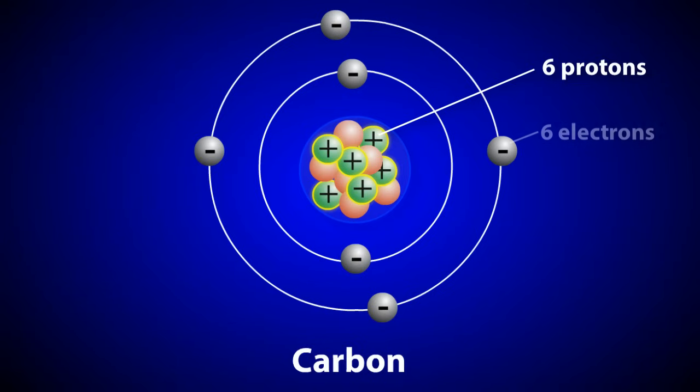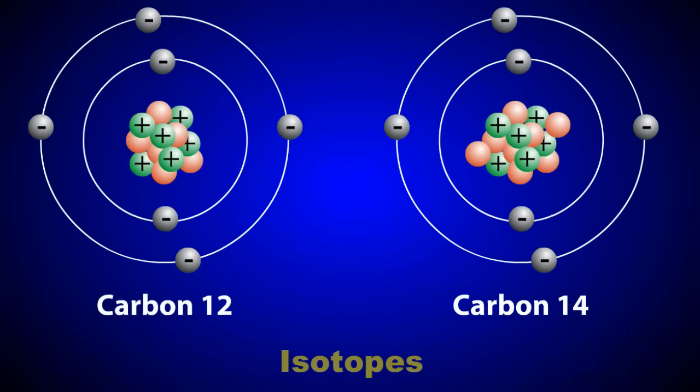All carbon has six protons and therefore six electrons. However, there may be minor variations in the number of neutrons in atoms of an element. These variations are called isotopes.